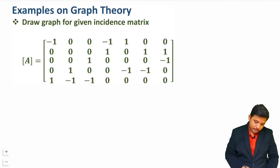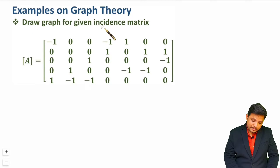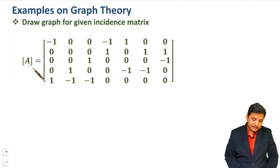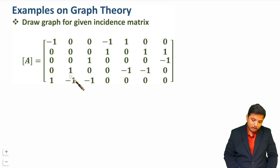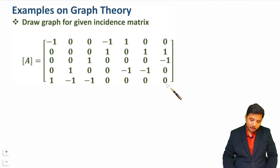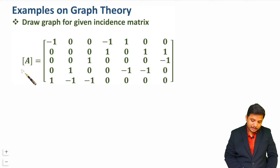We are given with an incidence matrix and we are asked to draw a graph for the given incidence matrix. Whenever you have been given with an incidence matrix, first of all you will have to check column-wise — all the columns should have a sum of zero. So here I am just checking it. It is zero for all columns. So I can say this is an incidence matrix.